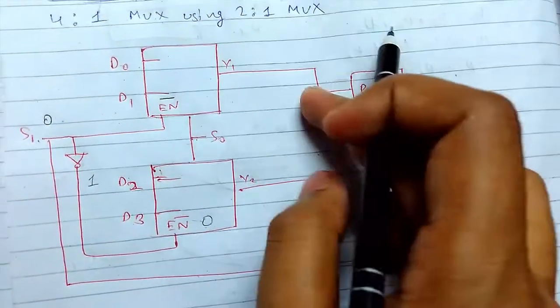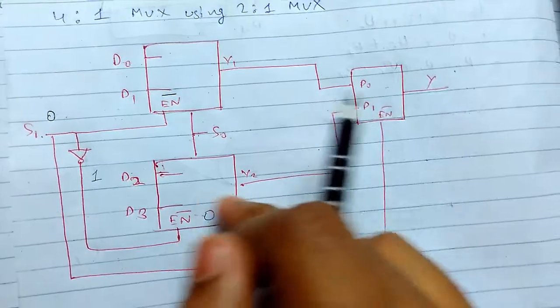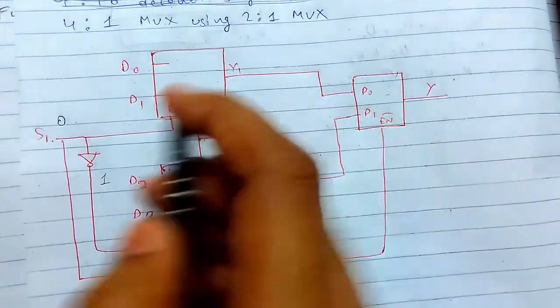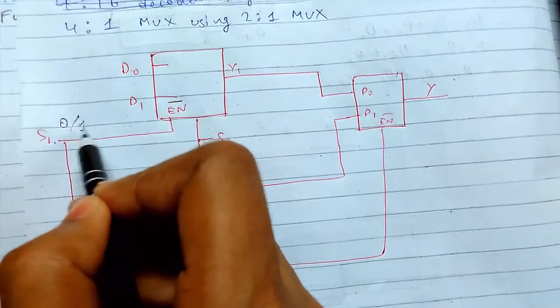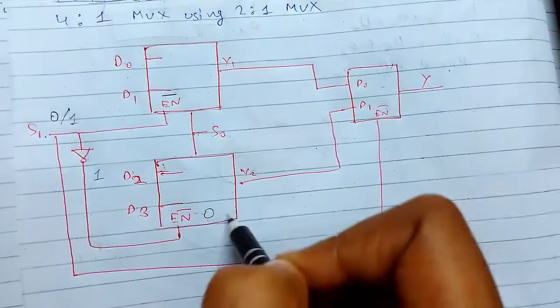Whatever output comes from here goes there, and similarly it works for this. When we want to pass 1, this will get deactivated and this will get activated.